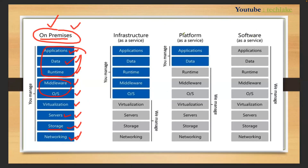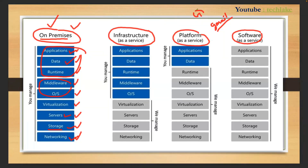When it comes to cloud, it primarily divides into three parts: Software as a Service, Platform as a Service, and Infrastructure as a Service. Software as a Service means end users will be using services directly — like Gmail, Outlook, Office 365, Google Drive, Amazon Prime, or Amazon Music. You just create an account and use it — that is Software as a Service.